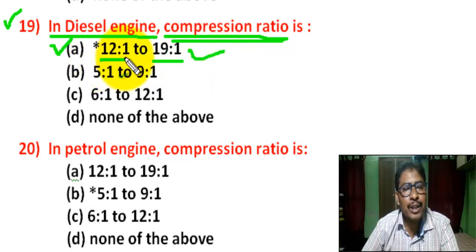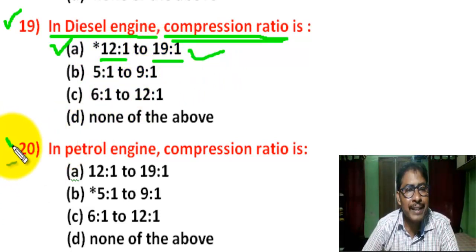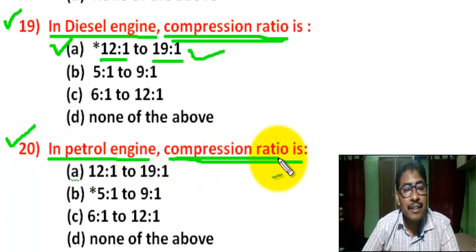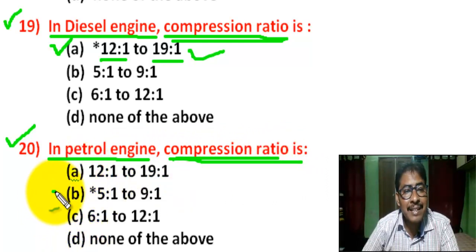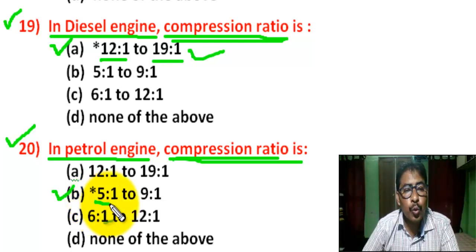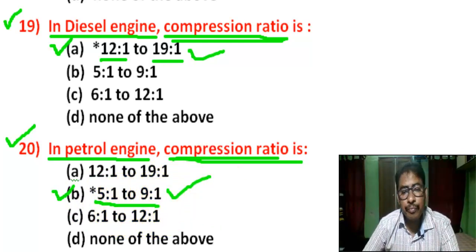Question number 20: In a petrol engine, compression ratio — there are four options. Correct answer is B — 5:1 to 9:1. The compression ratio in a petrol engine is within 5:1 to 9:1.